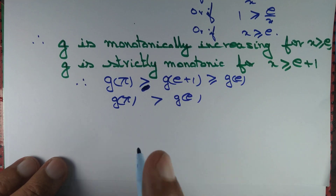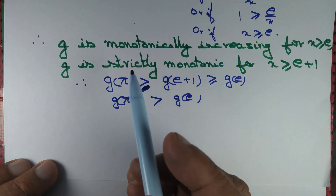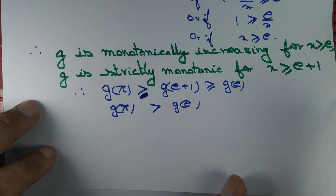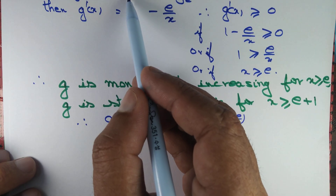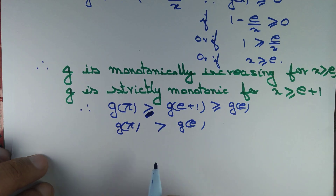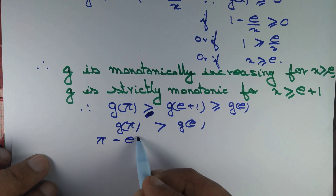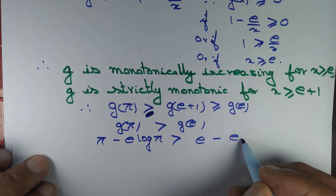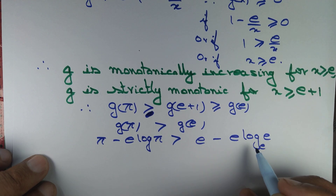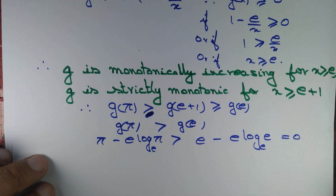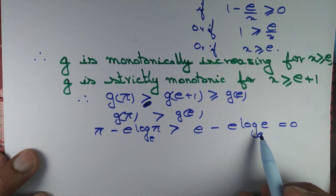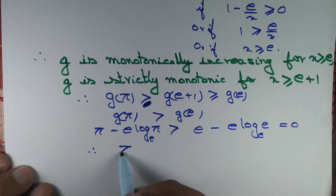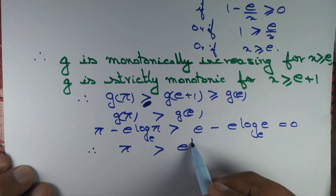Now, g of pi equals pi minus e times log pi, and g of e equals e minus e times log e. Since log of e with base e is 1, g of e equals e minus e times 1, which equals zero. Therefore, pi minus e times log pi is strictly greater than zero, which means pi is greater than e times log pi.